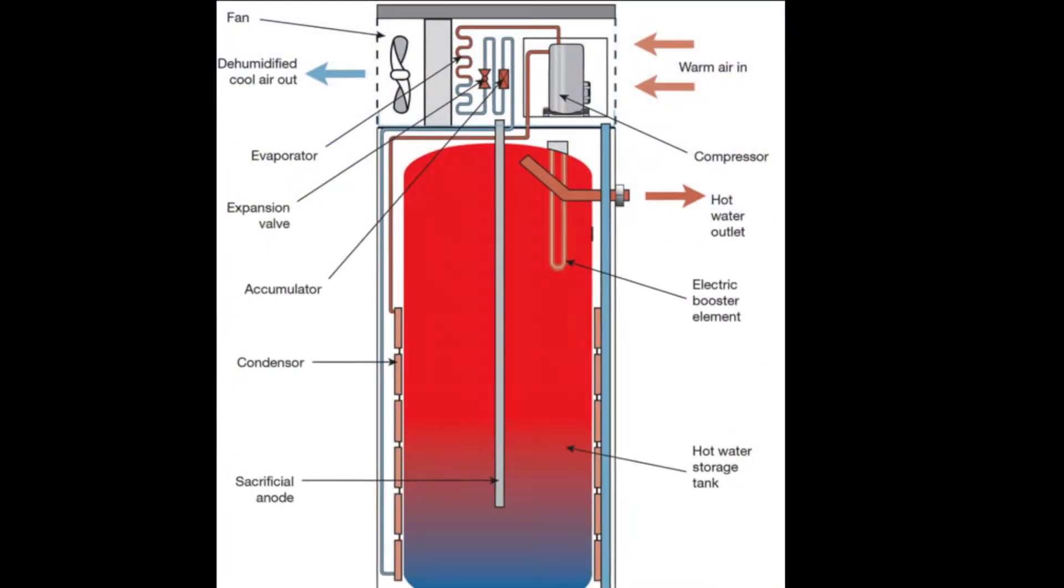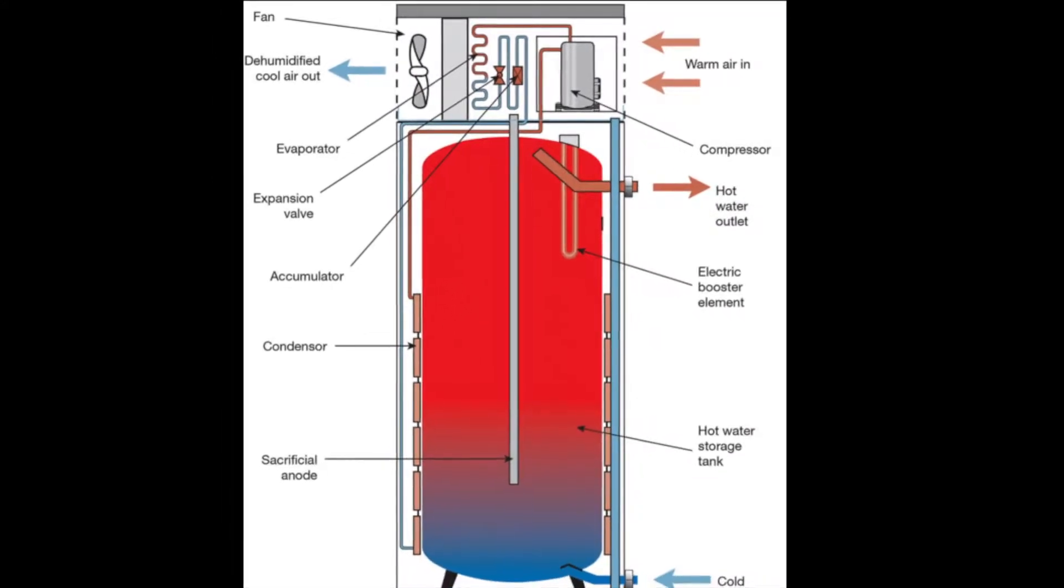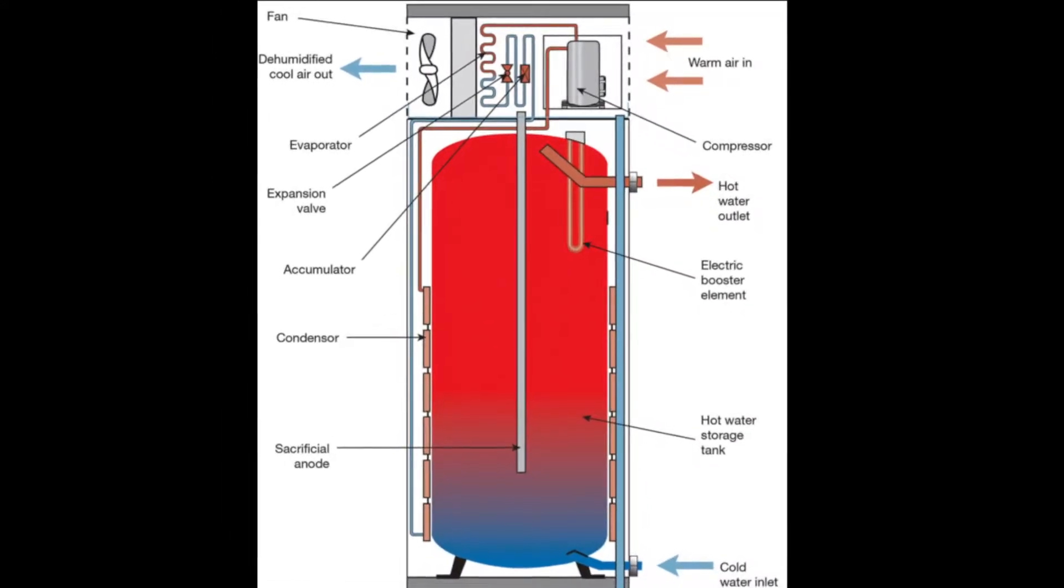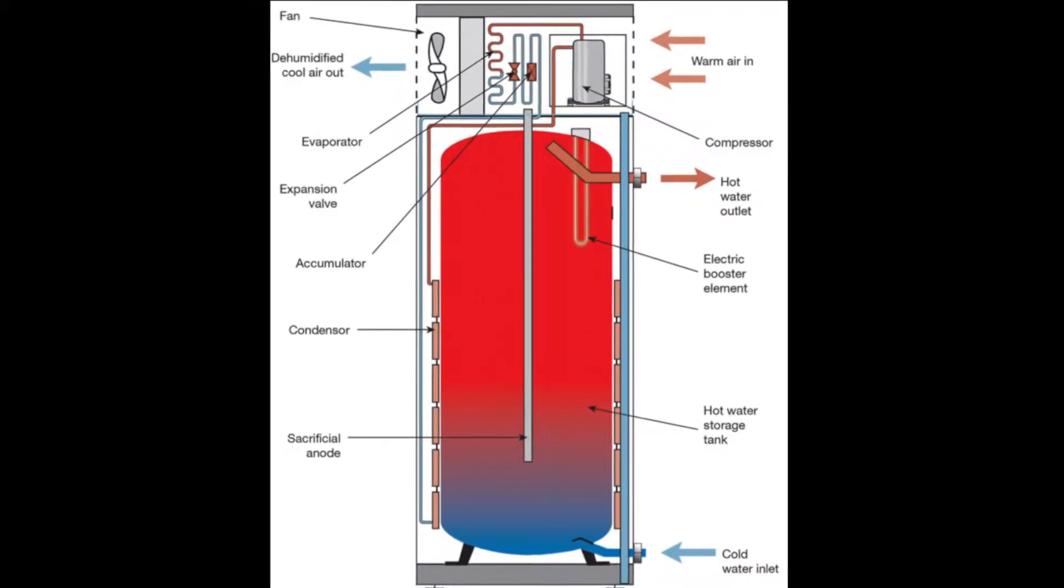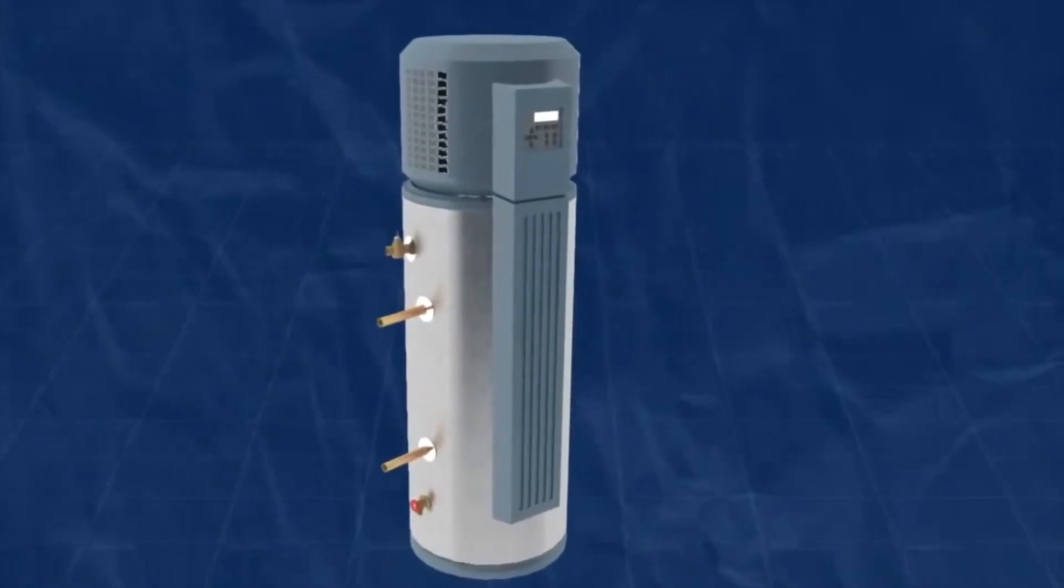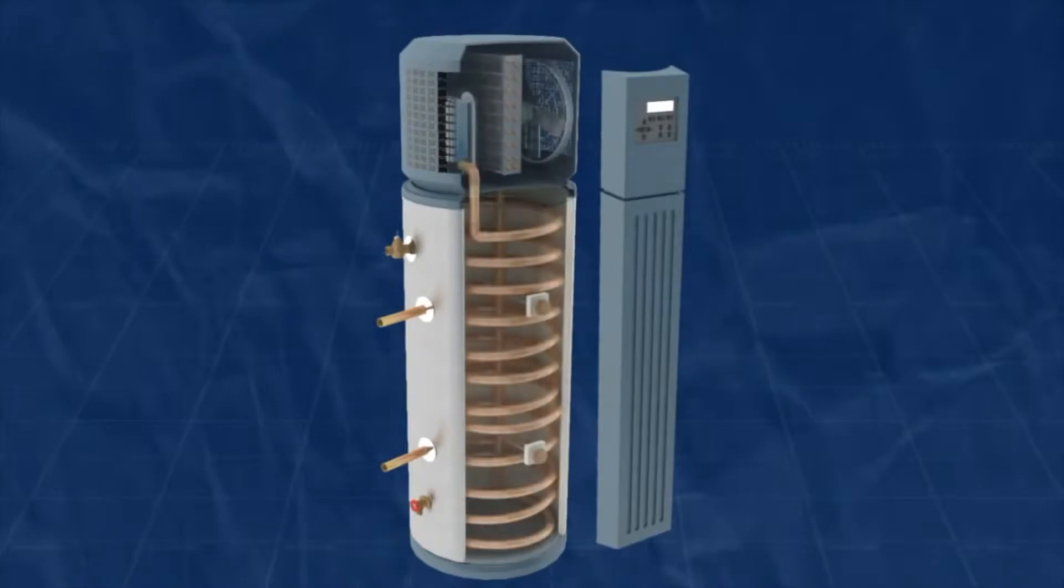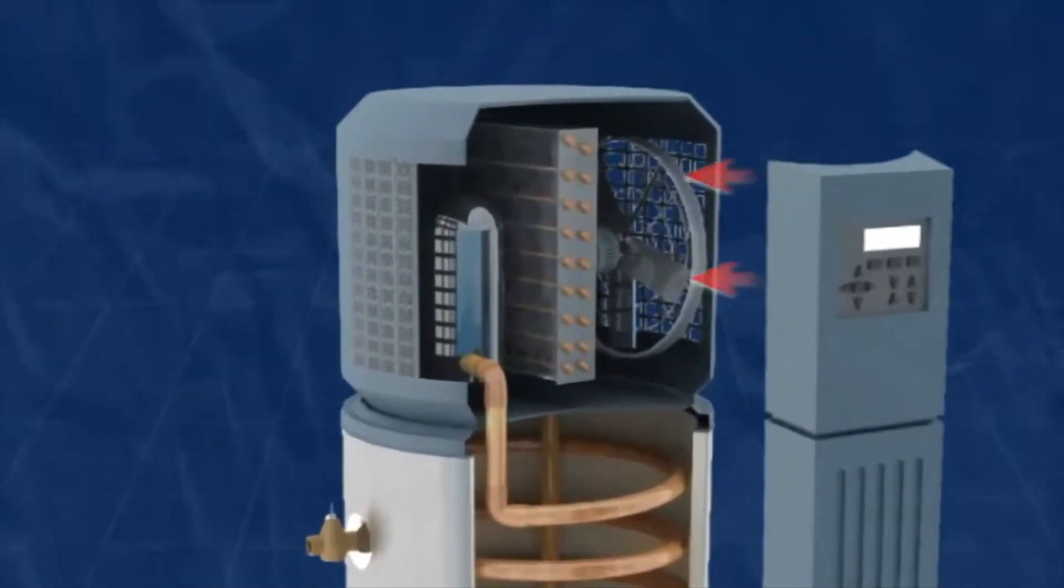Heat pump water heaters work by moving heat from air in the room to water in the tank. To move heat, heat pumps work like a refrigerator in reverse. While the refrigerator pulls heat from inside the refrigerator itself and sends it out into the surrounding room, a heat pump water heater pulls heat from the surrounding air and sends it, at a higher temperature, into a tank to heat water.